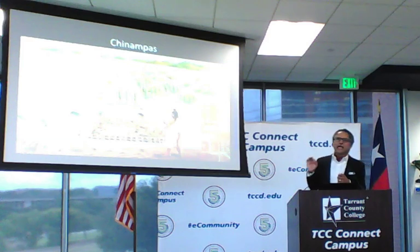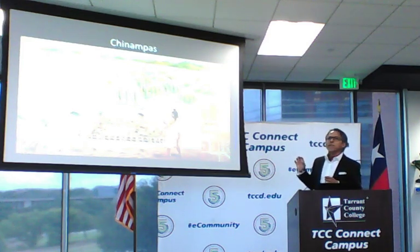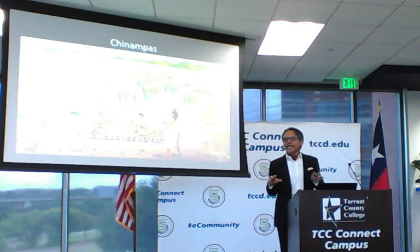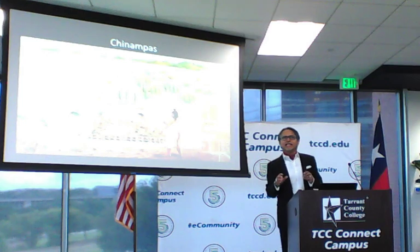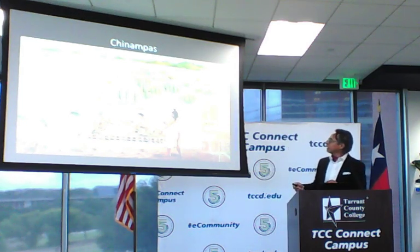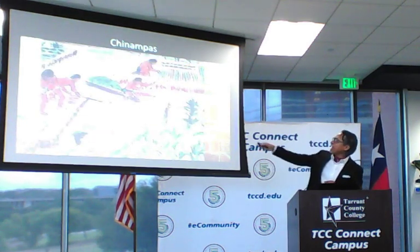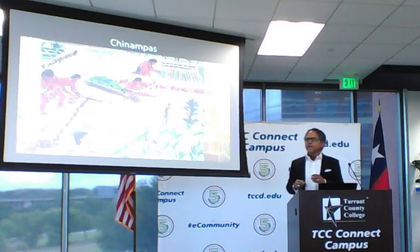They had a cultivation system called Chinampas. A Chinampa was something they built at the lake using wood and dirt, and then they would plant the seed and have tunnels where they would navigate and crop the plant.